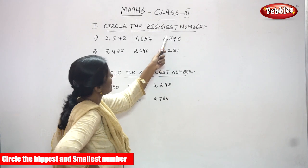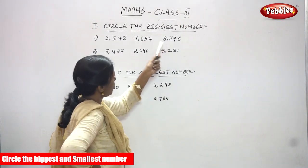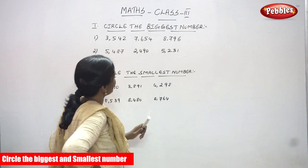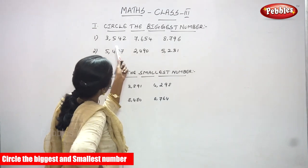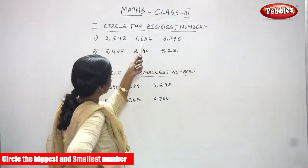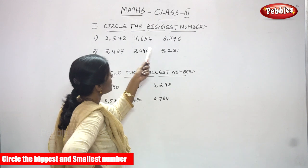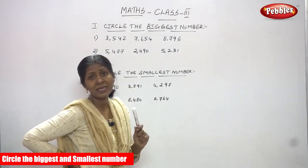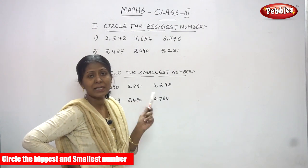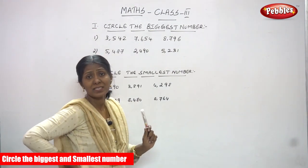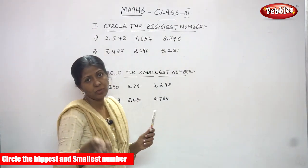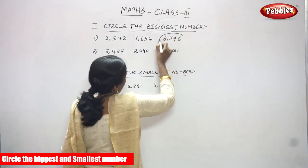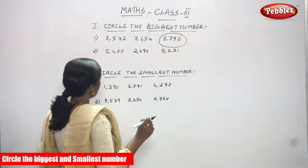That is the number you have to circle. You don't need to look at the hundreds, tens, or ones. For a four-digit number, concentrate only on the thousands place value first, find out which number is the biggest, and then circle it.